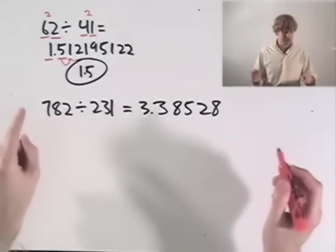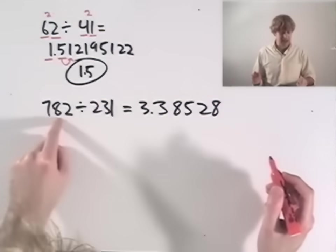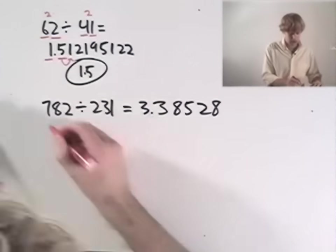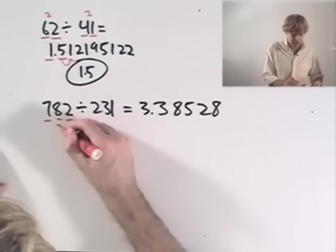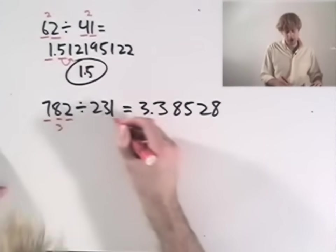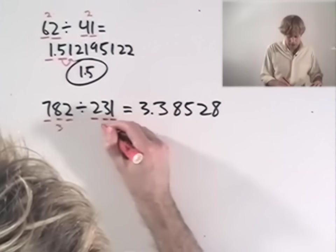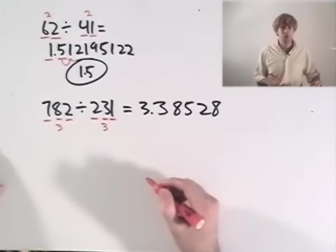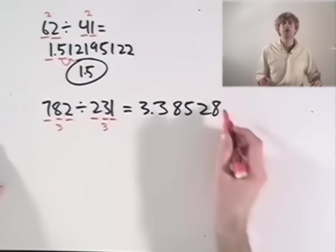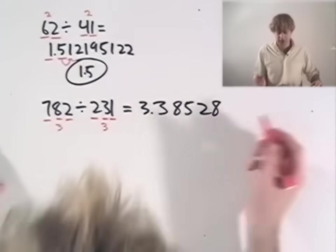How many significant figures in 782? Well, none of them are zero so three significant figures here. They're all significant. 231, none of them are zero. Three significant figures here. What does that mean? It means that I'm going to round my answer to three significant figures.